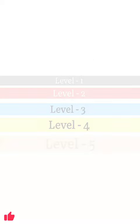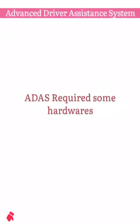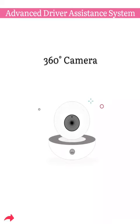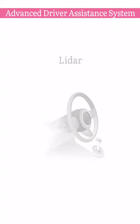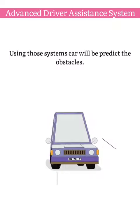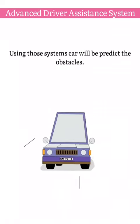ADAS requires some hardware like ultrasonic sensors, a 360-degree camera, lidar, and radar. Using those systems, the car will predict obstacles.